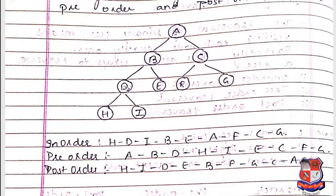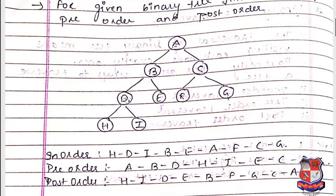Continuing in-order: D's subtree is done, so visit root B, then right child E. B's subtree is done, so visit root A. Then move to right child C: visit left child F, then root C, then right child G. In-order result: H, D, I, B, E, A, F, C, G.